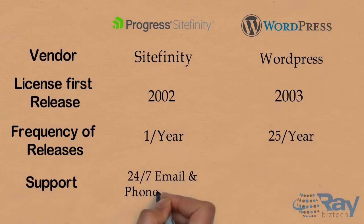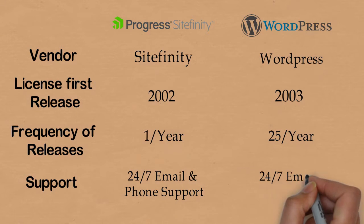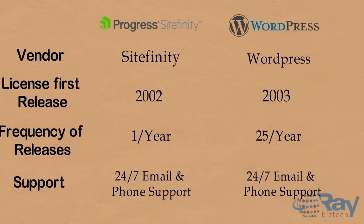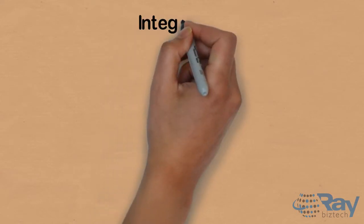Frequency of releases: Sitefinity 1 per year, WordPress 25 per year. Support: Sitefinity has 24x7 email and phone support, as well as WordPress has 24x7 email and phone support.